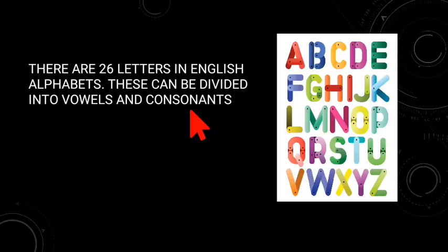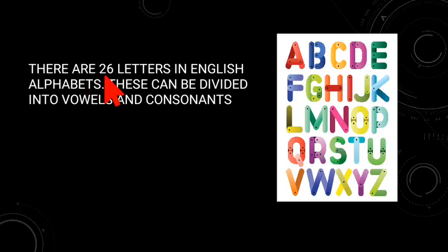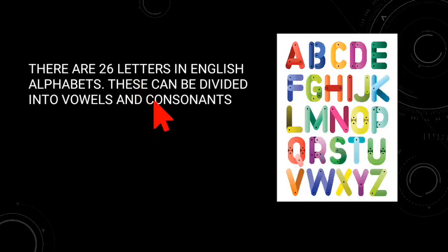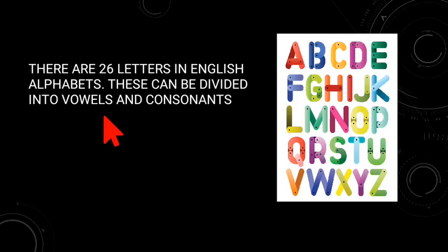There are 26 letters in the English alphabet. How many letters in the English alphabet? 26 letters in the English alphabet. This can be divided into vowels and consonants.